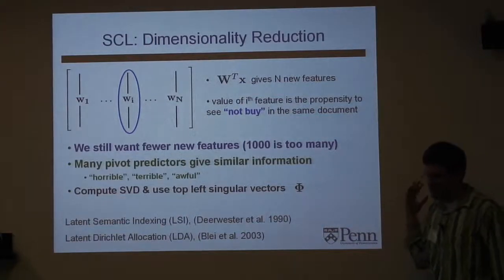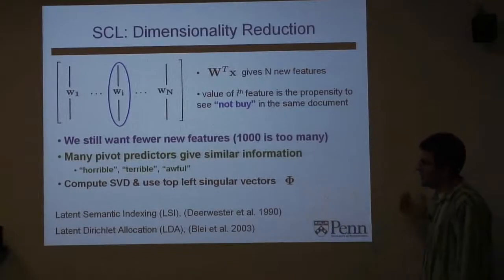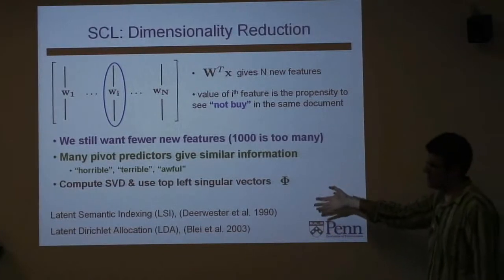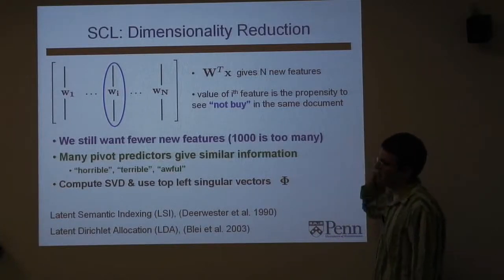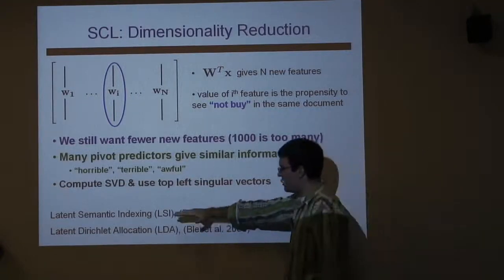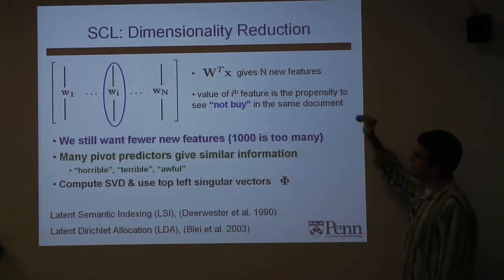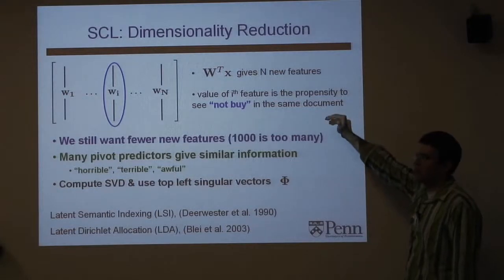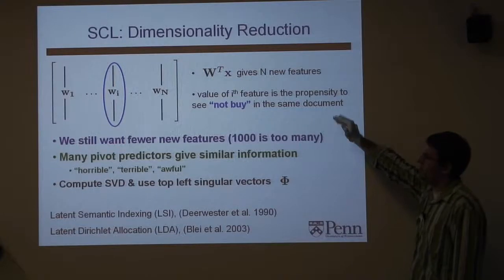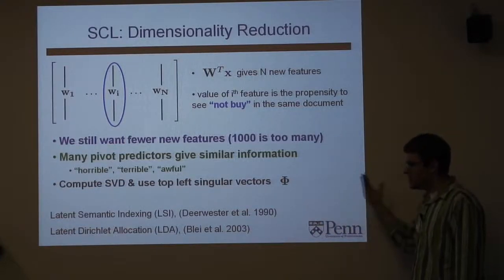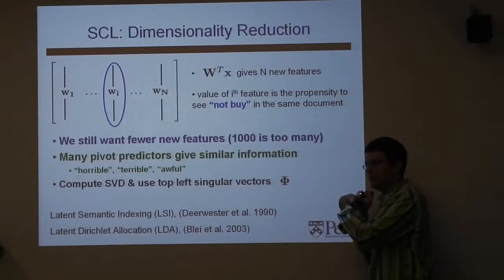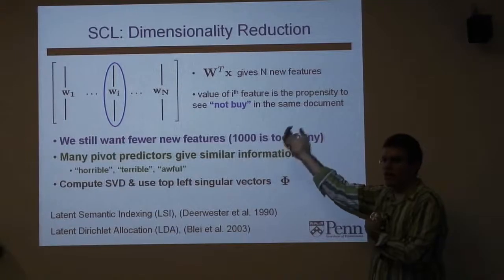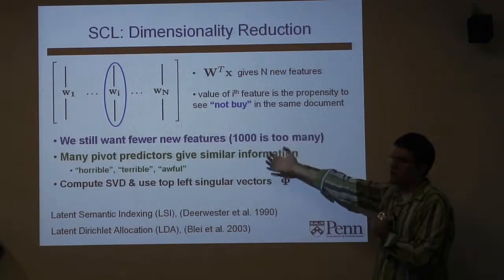For those who know the history of dimensionality reduction in language, the most famous approaches are latent semantic indexing and its Bayesian variant, latent Dirichlet allocation. The key difference is that here, by picking pivots, we can characterize the kinds of representations we learn and direct this dimensionality reduction to give us good features that are useful discriminatively. If we get a good representation, great; if not, there's a principled way to understand how to redesign it for a particular discriminative problem.